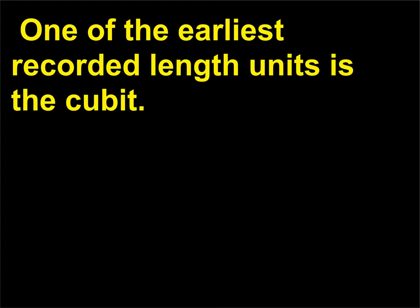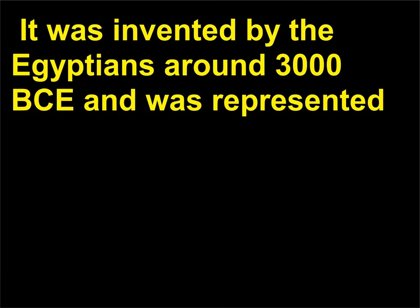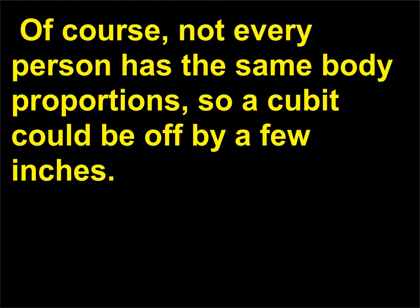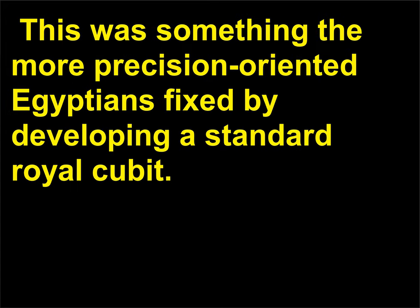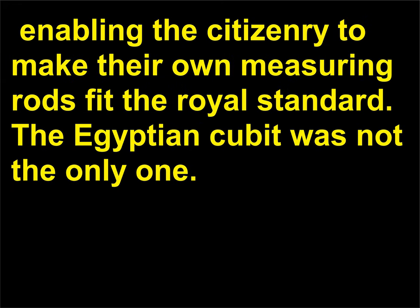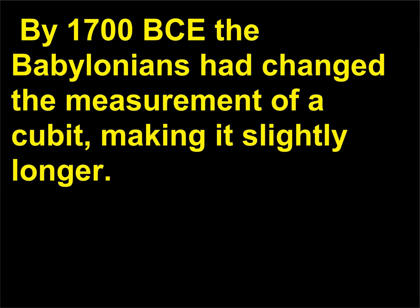One of the earliest recorded length units is the cubit. It was invented by the Egyptians around 3000 BCE and was represented by the length of a man's arm from his elbow to his extended fingertips. Of course, not every person has the same body proportions, so a cubit could be off by a few inches. This was something the more precision-oriented Egyptians fixed by developing a standard royal cubit.